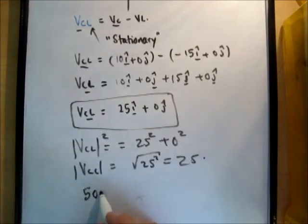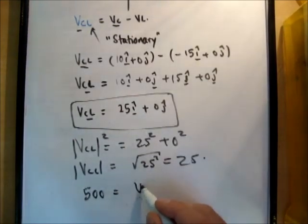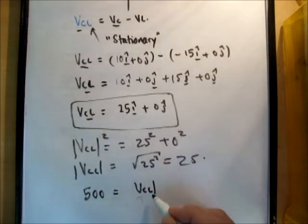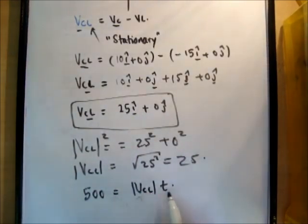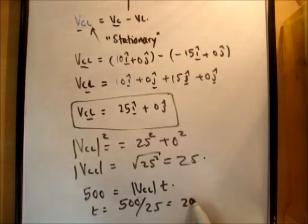So it's going to be 500 is equal to the magnitude of VCL times the time. So it's going to be equal to, t is going to be equal to 500 over 25, which is equal to 20 seconds.